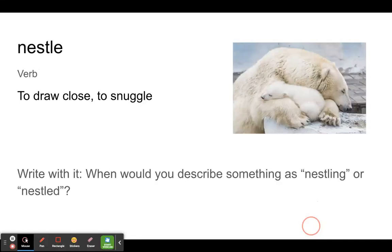So our first word is nestle. It's a verb to draw close, to snuggle. This baby polar bear is nestled in its mother's arms. You can see it's so comfortable there. If you're writing, when would you describe something as nestling or nestled? You see this a lot when you have something that's kind of cupped inside of something else, surrounded on at least three sides by something else. So the polar bear is wrapped in the mother's arms. And the verb nestled has this feeling of comfort, of security, and safety.